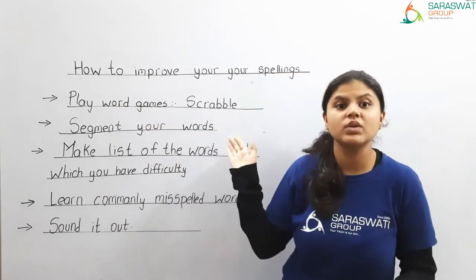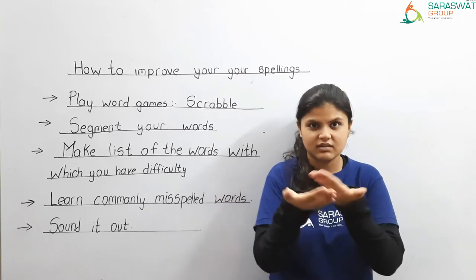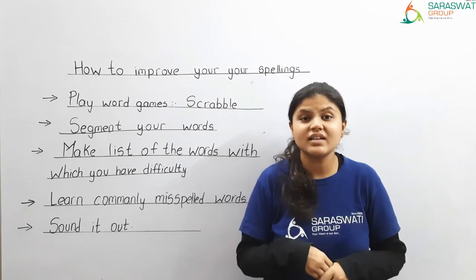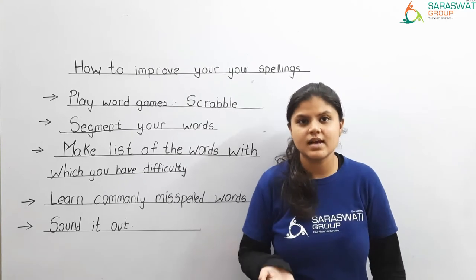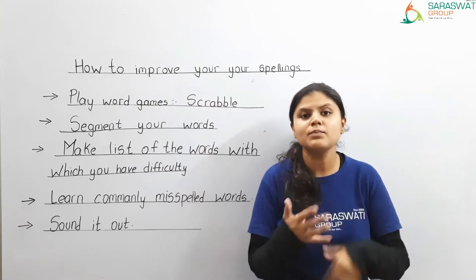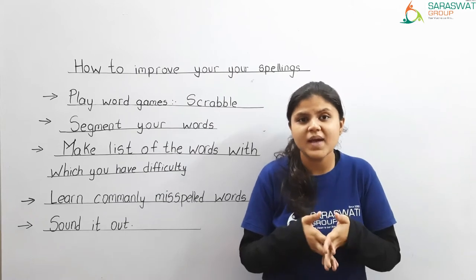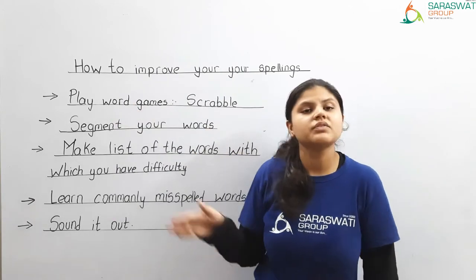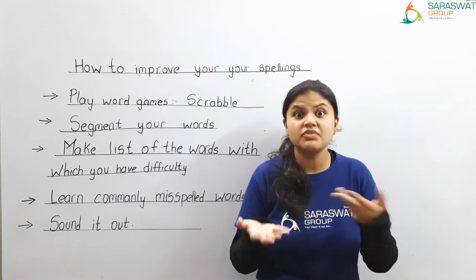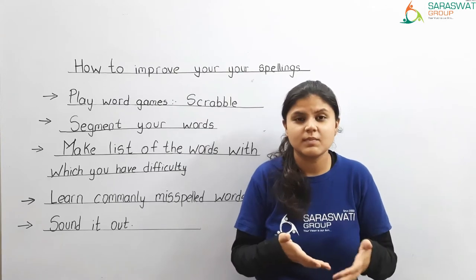Number one is: play word games. For example, Scrabble. That is a game which you can play and improve your spellings with your friends, with your parents, with your siblings. In this game, you can improve spellings and get better at spellings. So that is the first technique — by playing different kinds of word games such as Scrabble. You can request your parents to purchase it and play it with your friends and siblings.